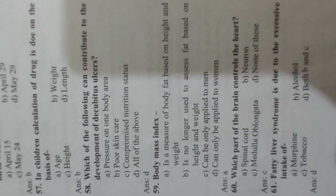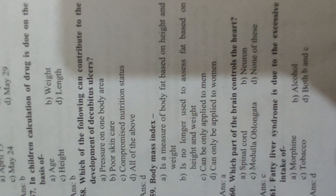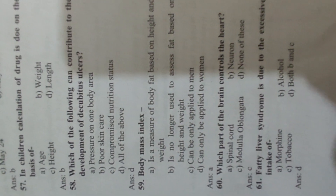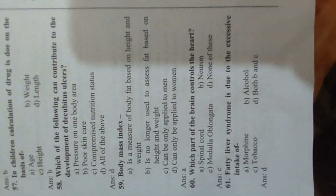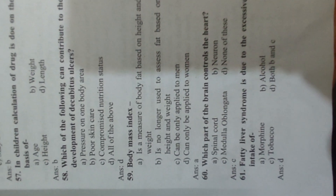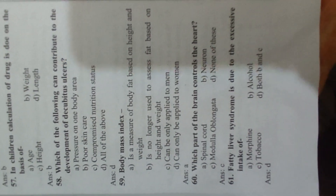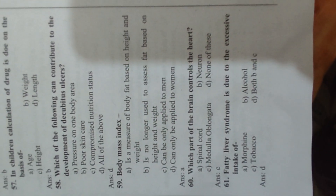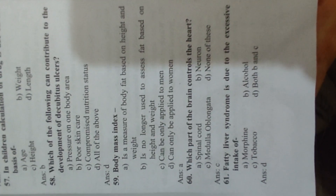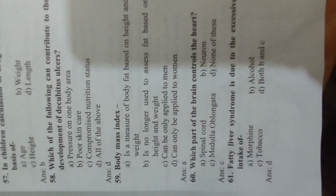Question 59: Body mass index (BMI) is Answer A, a measure of body fat based on height and weight. Question 60: Which part of the brain controls the heart? Answer C, medulla oblongata. Question 61: Fatty liver syndrome is due to the excessive intake of Answer D, both B and C.